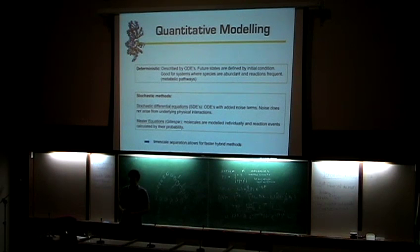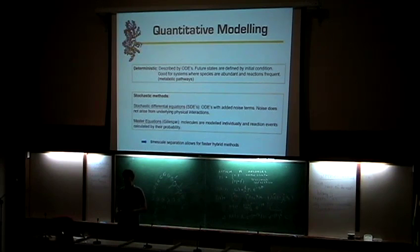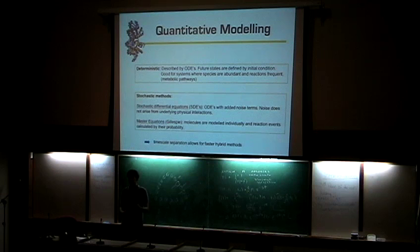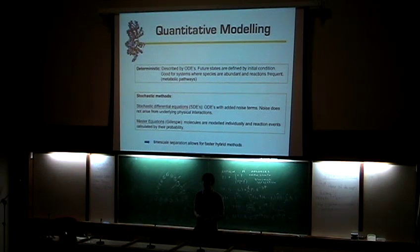So you consider all your possible reactions in your system as stochastic events. There are limited ways of solving that analytically, and sometimes you have to - most of the time you have to - do simulations. Sometimes, if you have a big timescale separation where some of the reactions happen a lot faster than the others, you can average those and then you have a faster hybrid algorithm. We're going to be seeing some of that today.